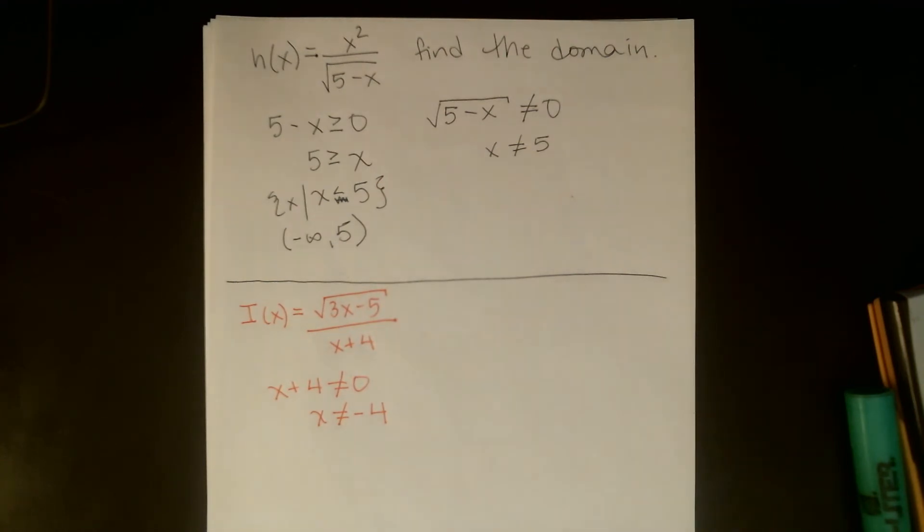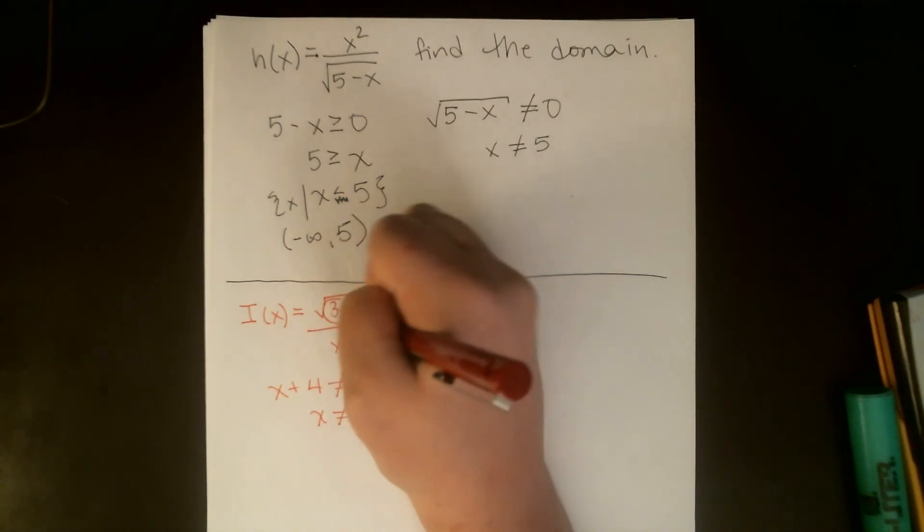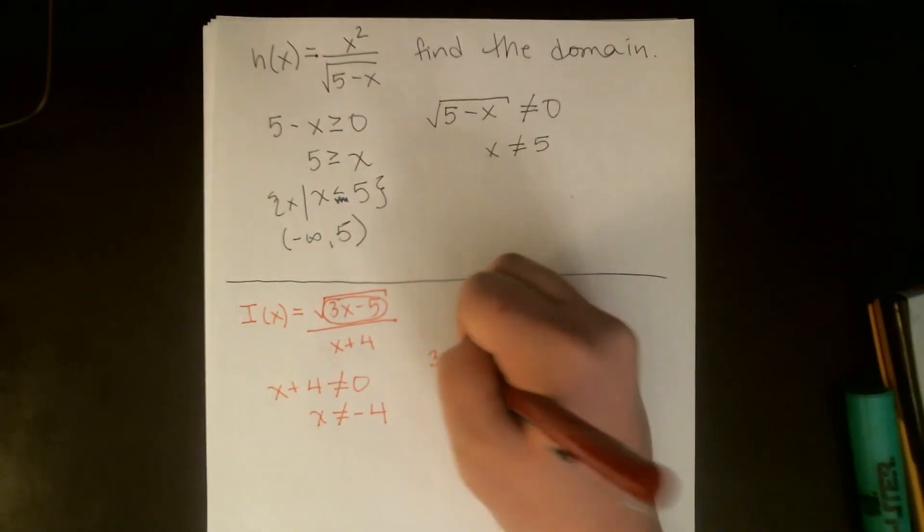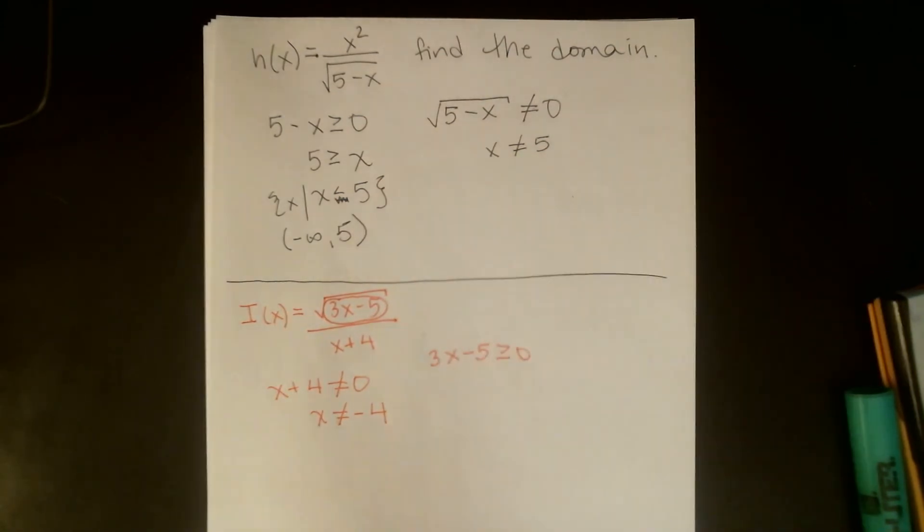Unfortunately, I'm not done. I'm not worried about the top of the fraction being zero. I'm not worried about whether the top of the fraction is positive or negative, but I am worried about this part of the top of the fraction being negative. So I want to make sure that 3x minus 5 is greater than or equal to zero. I can't take the square root of the 3x plus 5 unless it's greater than or equal to zero.